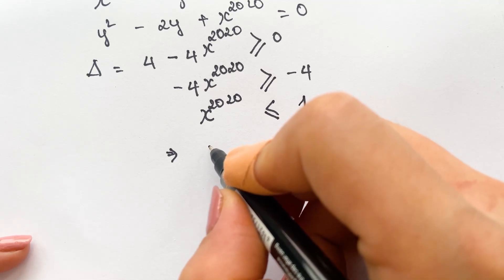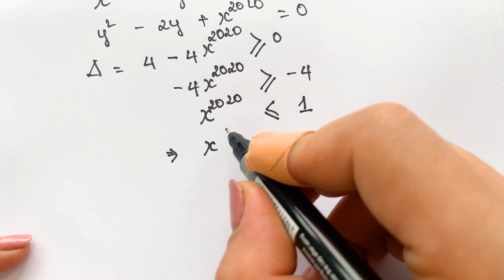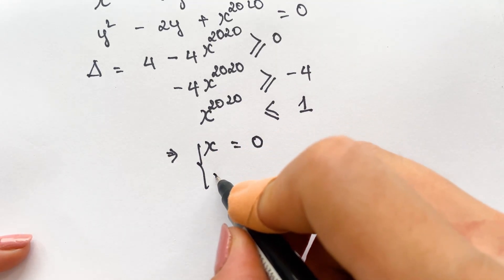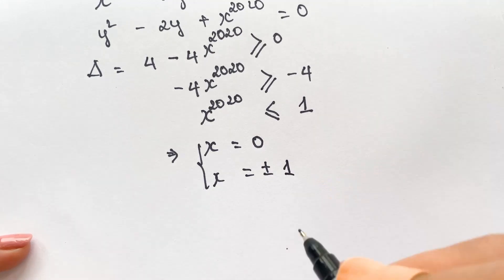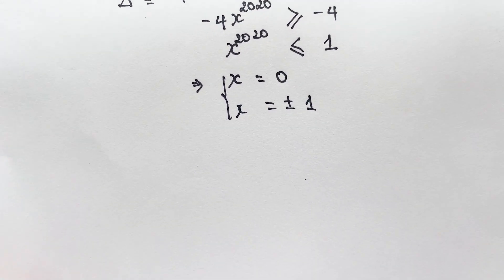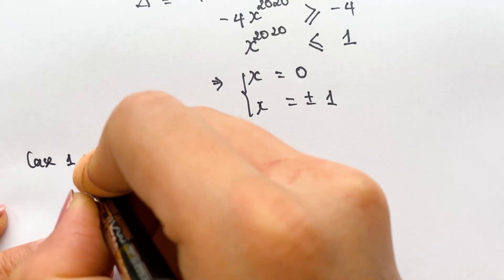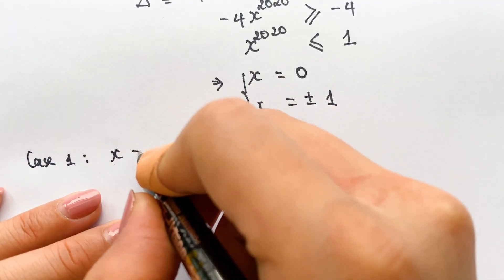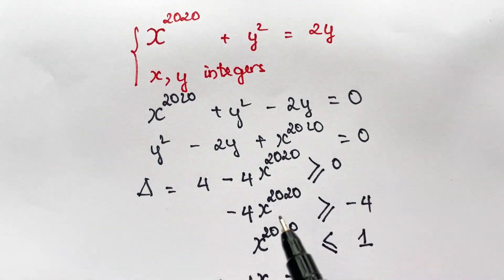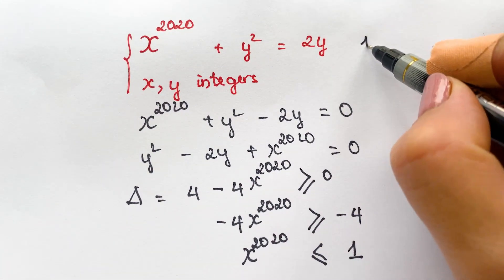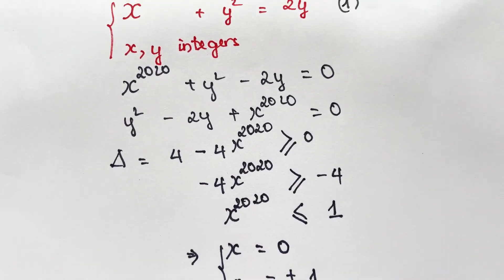The three cases are: firstly x equals zero, and then x equals plus or minus 1. For case number one, x equals zero — you need to substitute into the first equation.